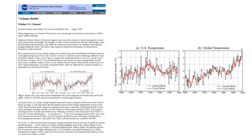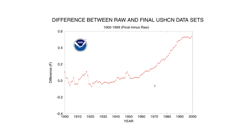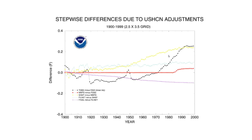But Dr. Hansen wanted the graphs to show warming and the U.S. temperature record wasn't. So they came up with a scheme to make the U.S. temperature look like it was warming by altering the data. This graph is from 2005. In early versions of the data tampering, they largely left temperatures prior to 1960 alone and then started warming them progressively after that. But the total amount of data tampering was only about one-half degree Fahrenheit, and almost all of it was due to time of observation bias, which does have some legitimate scientific basis.